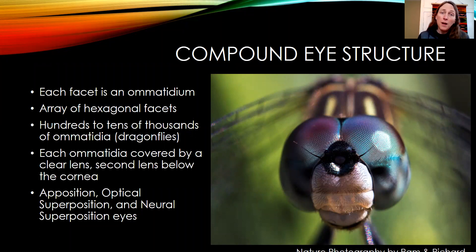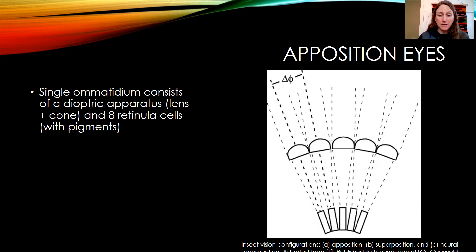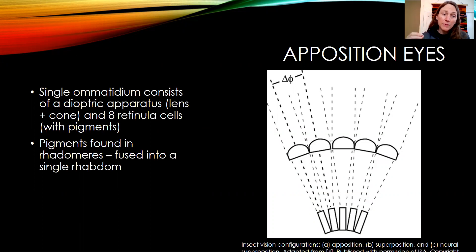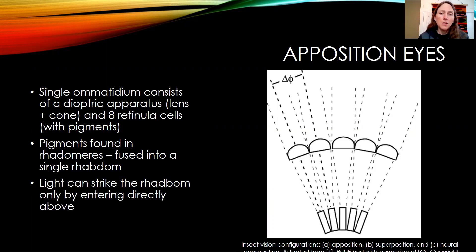The three types are apposition eyes, optical superposition eyes, and neural superposition eyes. In an apposition eye, a single omatidum consists of a dioptric apparatus — the lens and the cone — and then eight retinula cells with pigments inside. The pigments are found in structures called rhabdomeres, which are fused into a single rhabdom. This schematic shows the lens cells along the top and the rhabdoms along the bottom. Light can only strike the rhabdom when it comes directly through the lens; light coming from the side won't hit the rhabdom in an apposition eye.